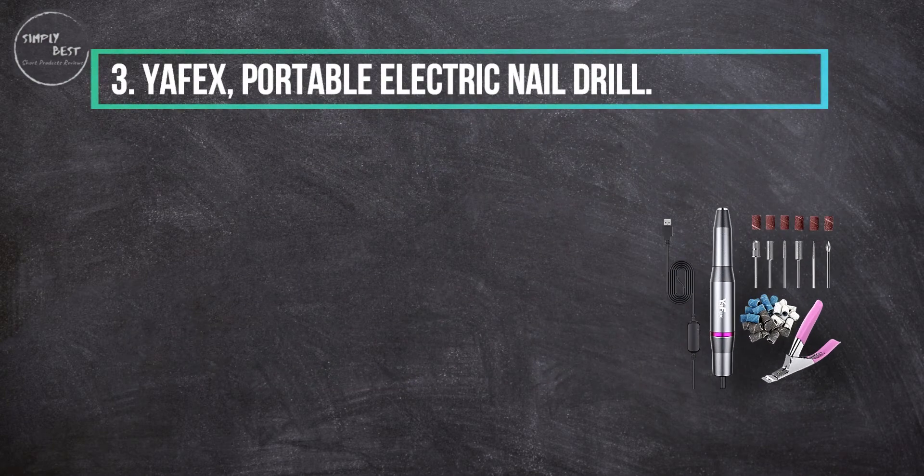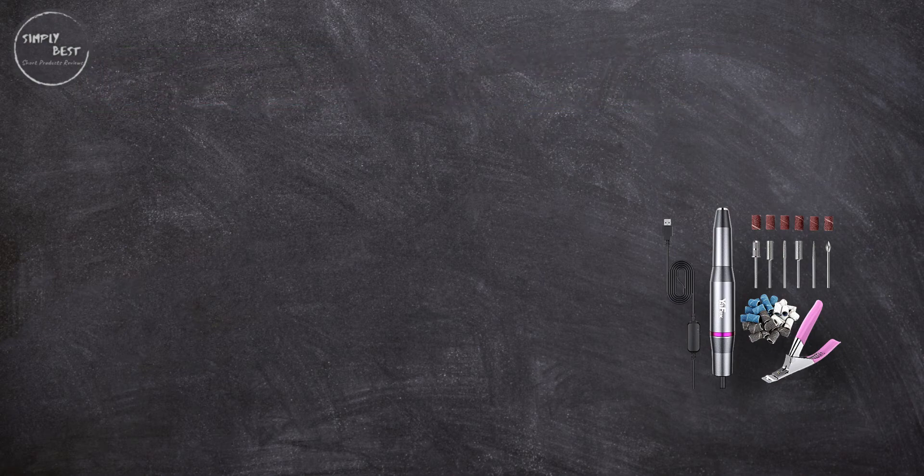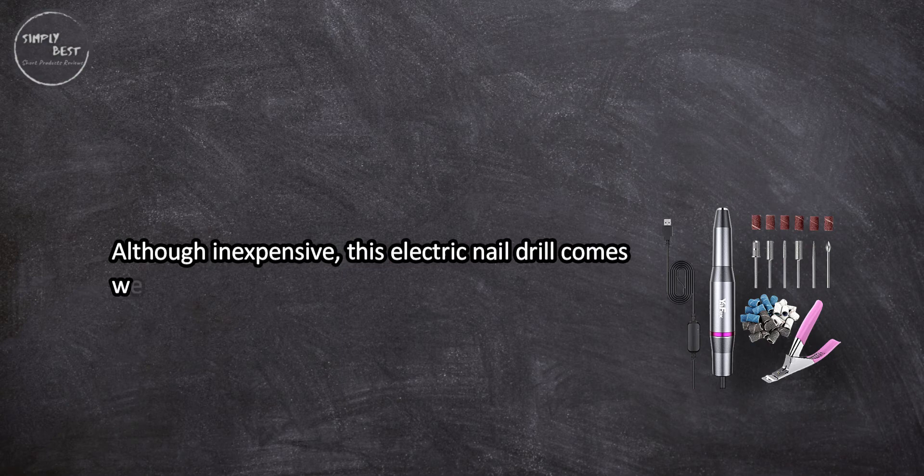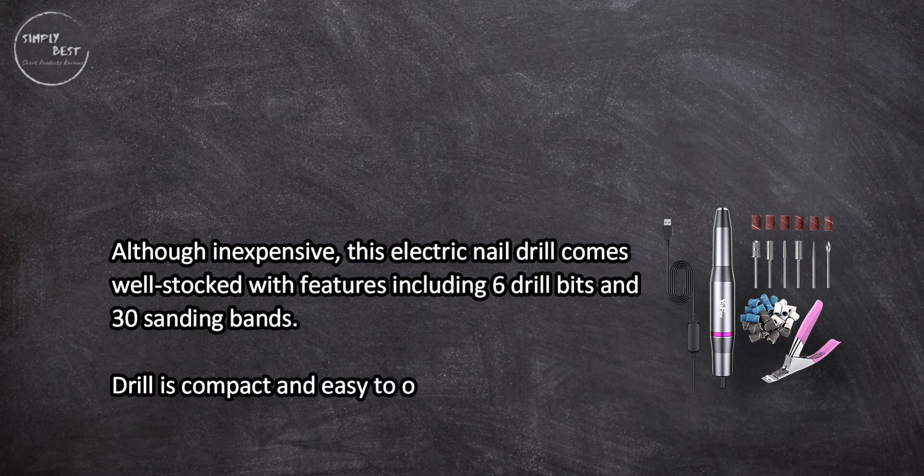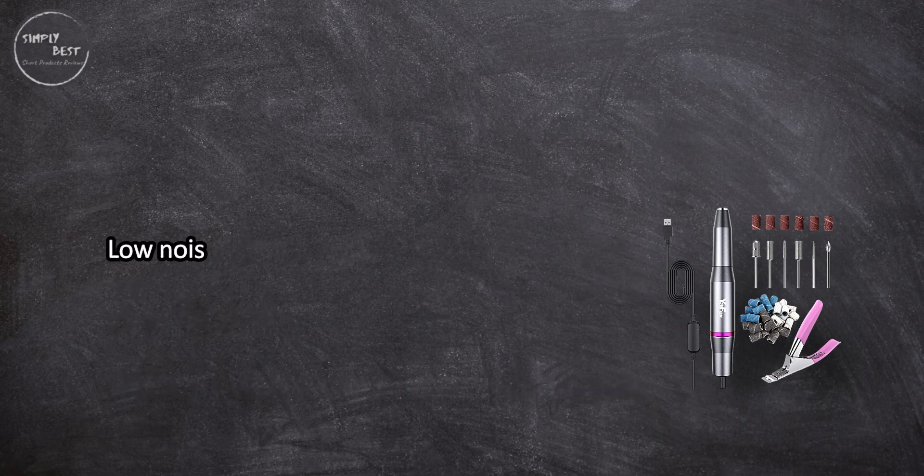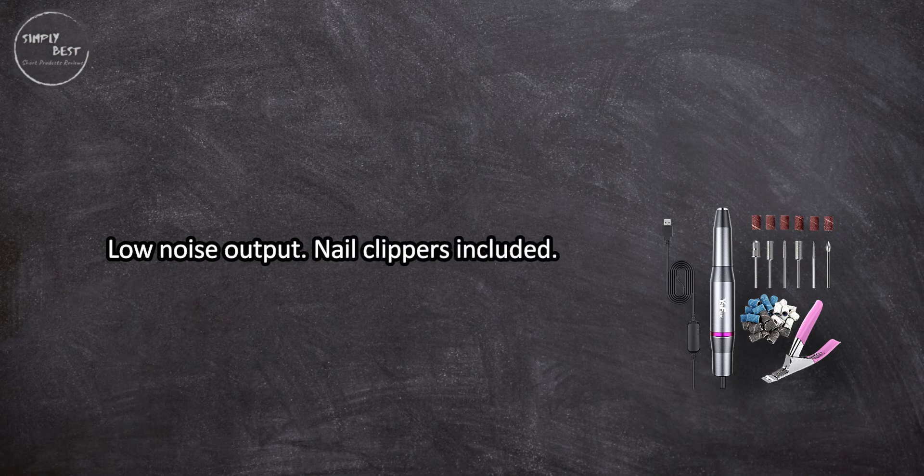At number three, the Effex Portable Electric Nail Drill. Although inexpensive, this electric nail drill comes well-stocked with features, including six drill bits and 30 sanding bands. The drill is compact and easy to operate and transport, with low noise output and nail clippers included.